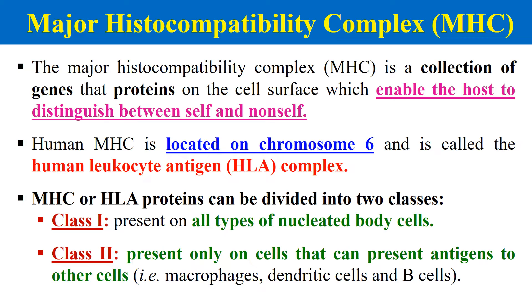First of all we should know what MHC is. MHC is a collection of genes which produce proteins that are generally expressed on the cell surface. These MHC molecules enable the host to distinguish between self and non-self — meaning immune cells recognize which cell belongs to the host and which comes from outside.